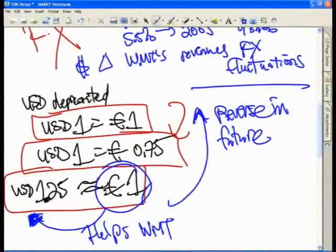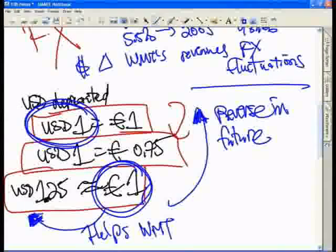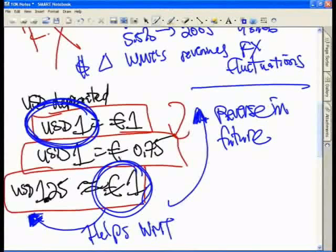that one euro, now it's only able to buy one US dollar if this were to reverse and the US dollar were to appreciate. What does this mean? This is what's going to happen to Walmart's earnings.